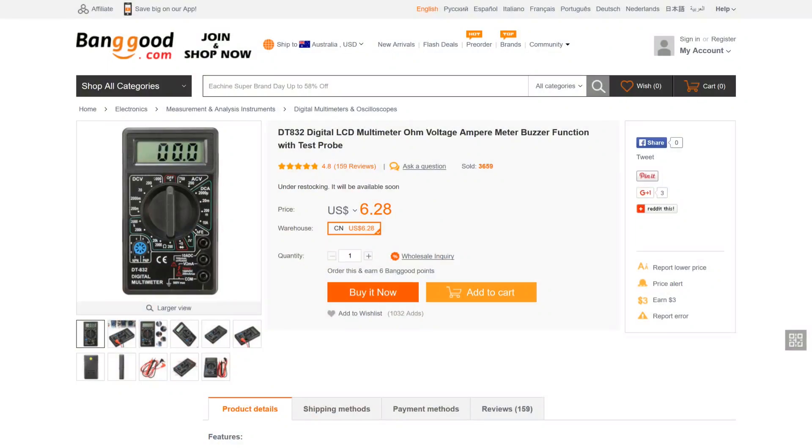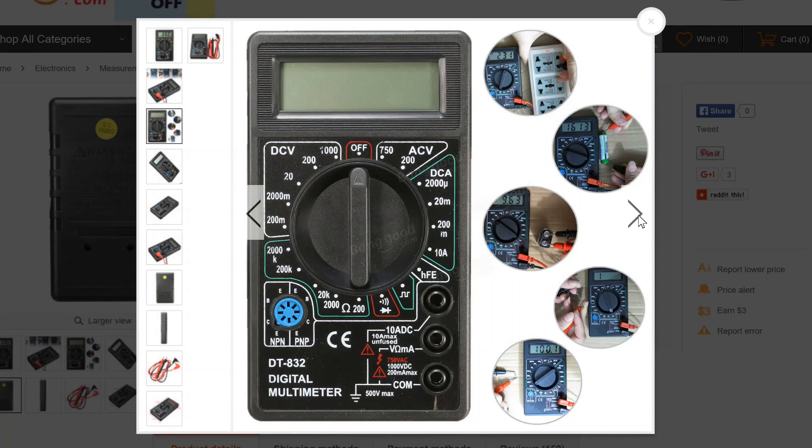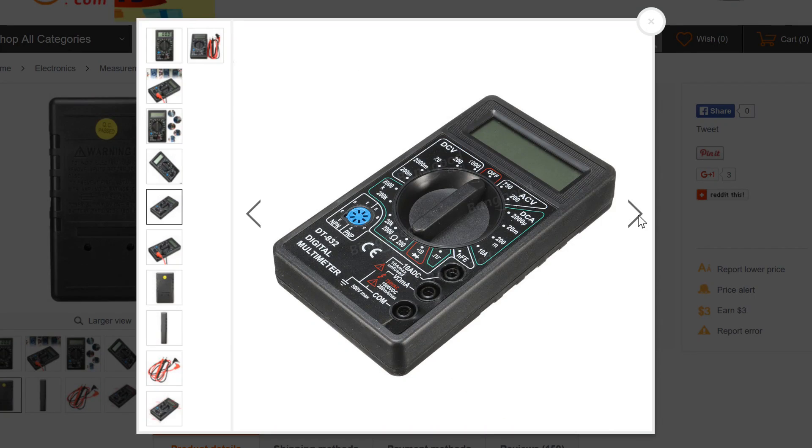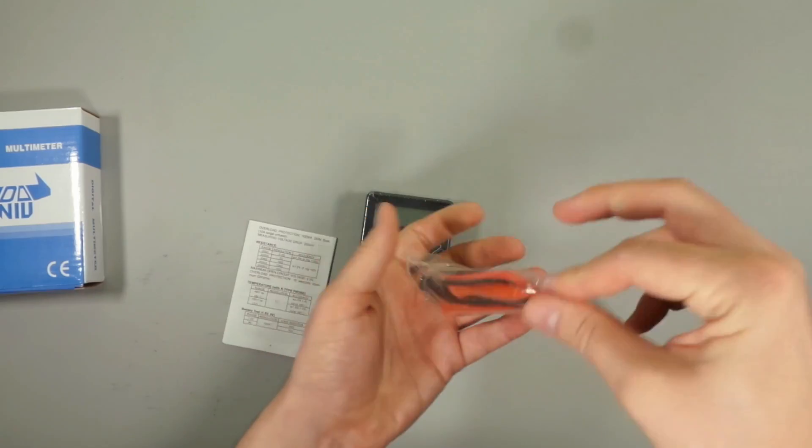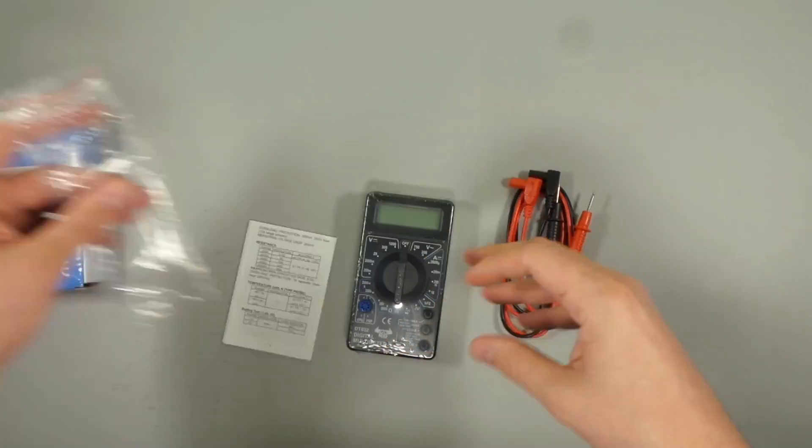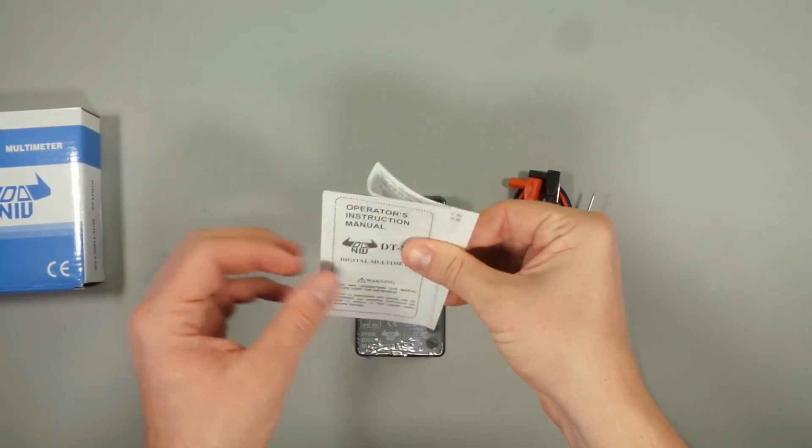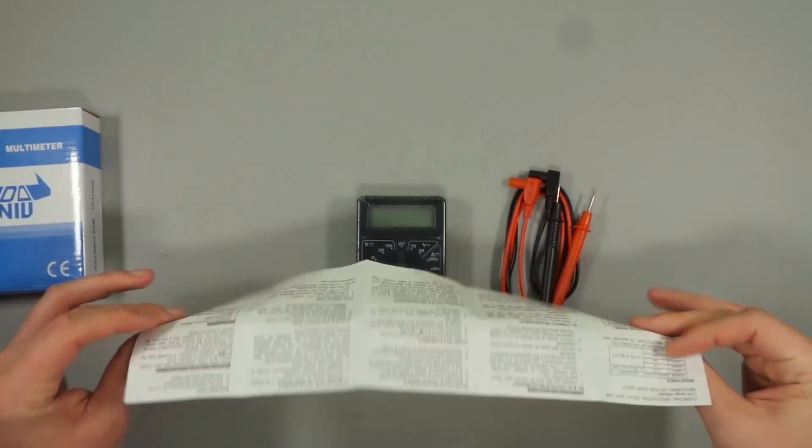This multimeter comes with a set of leads in a little mini ziplock bag, comes with the meter itself, and a single page set of instructions.